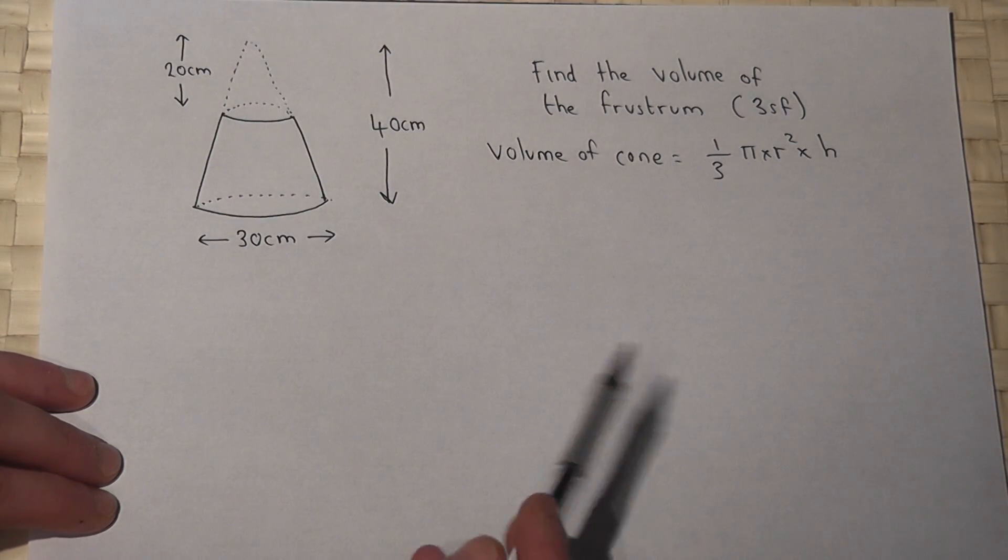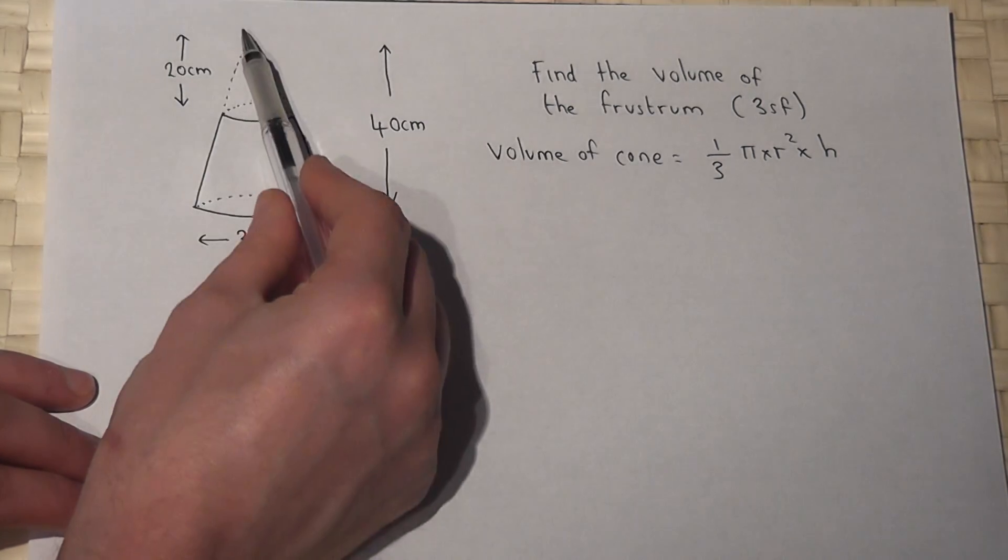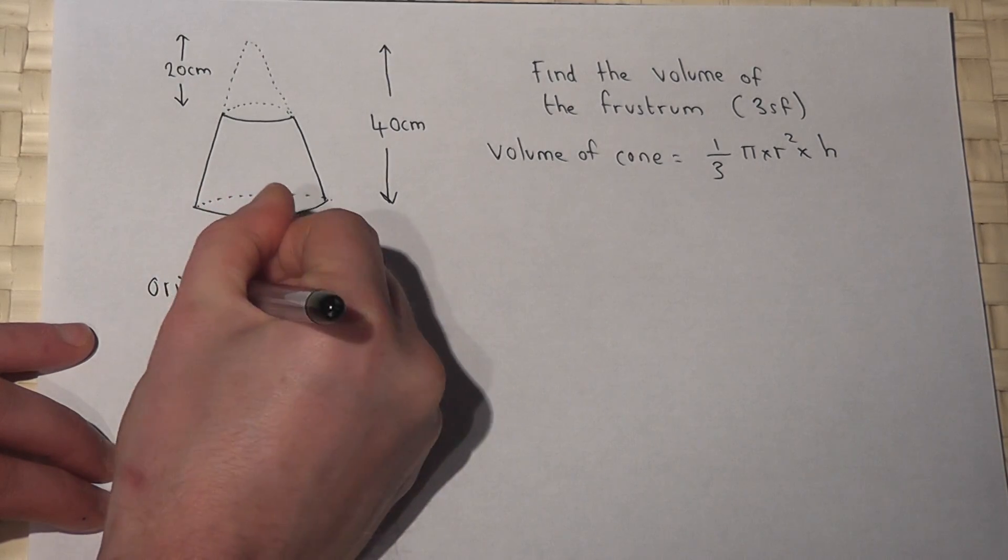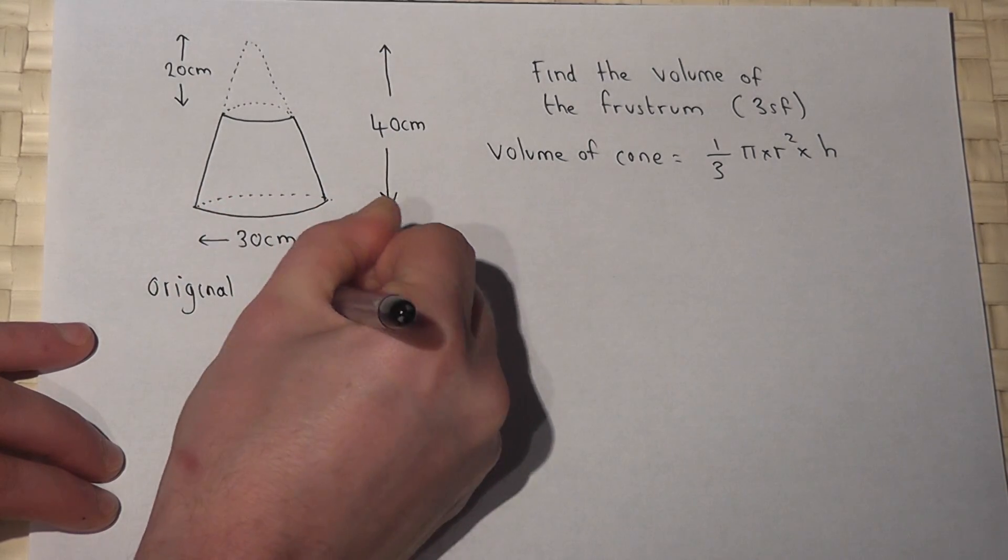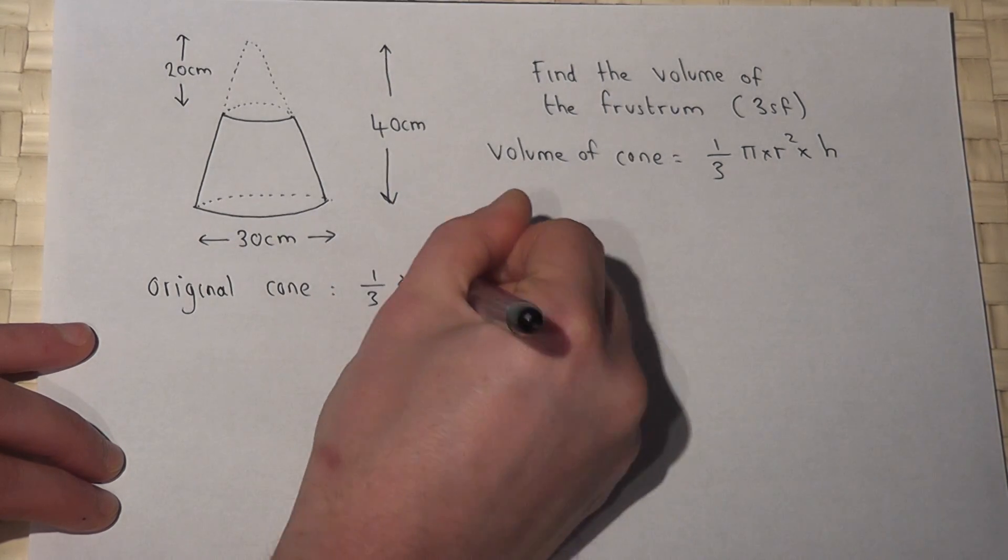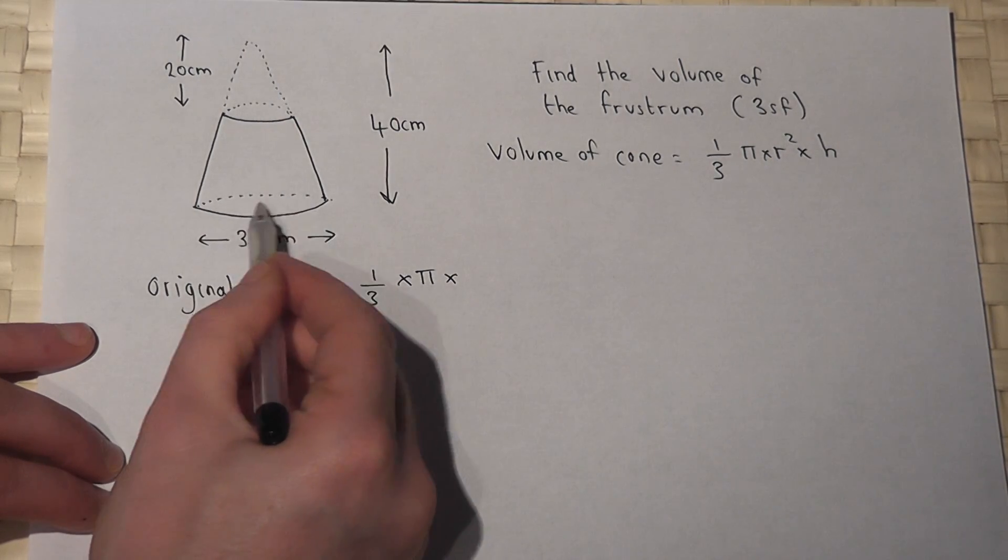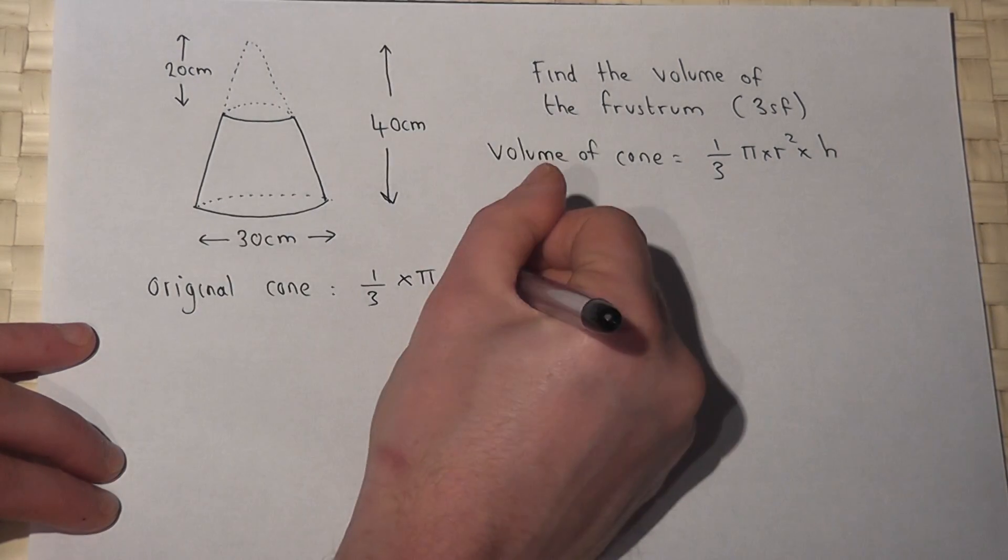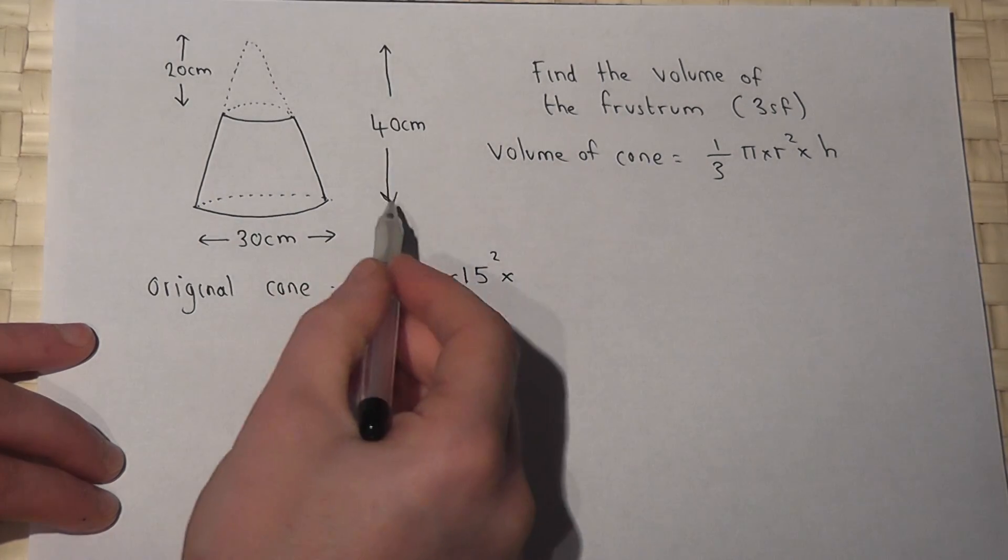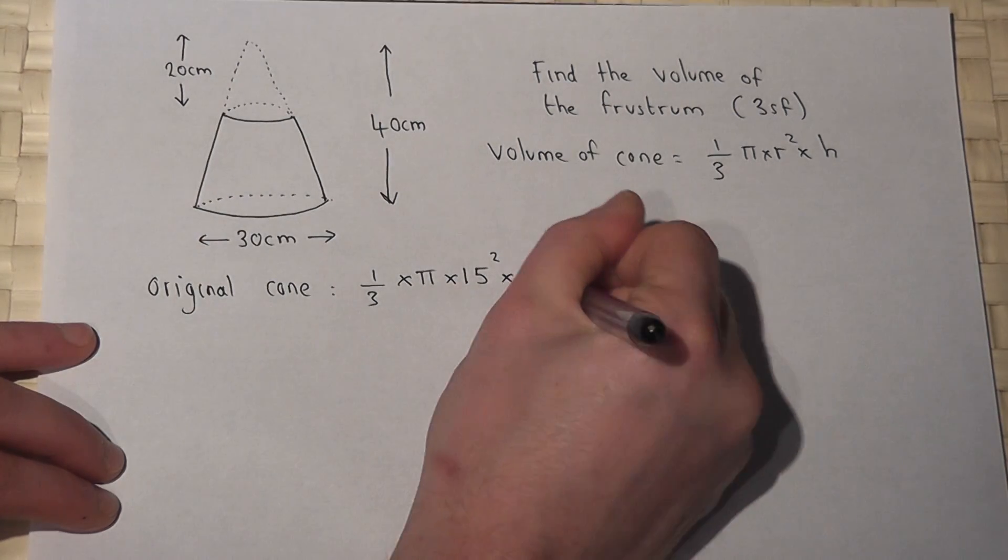Now I could find the total volume of the original cone, so the original cone would be one third times by pi. Now this would have a radius not of 30 but of 15, so 15 squared, and this cone had a height before it was chopped off of 40 centimeters.